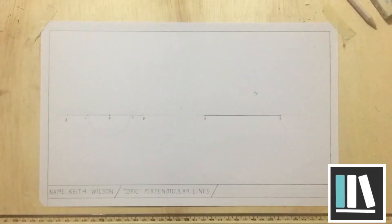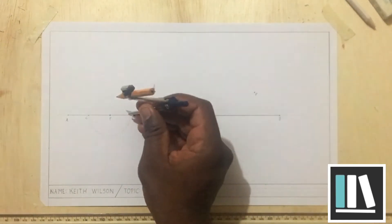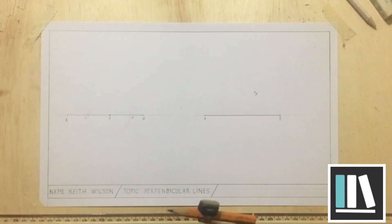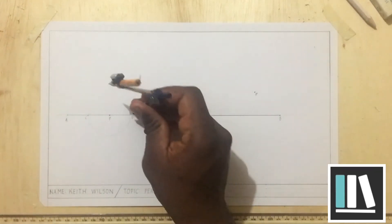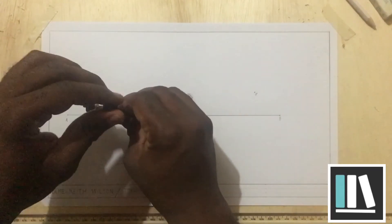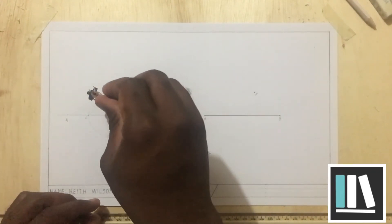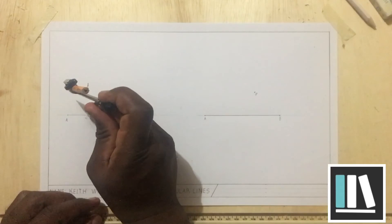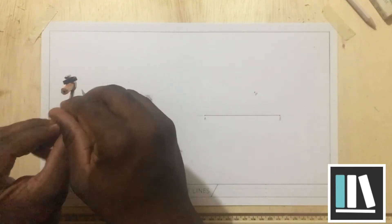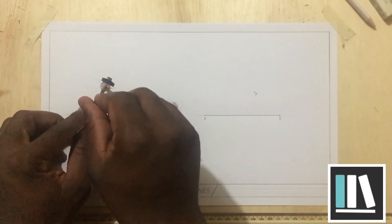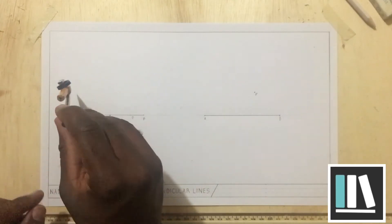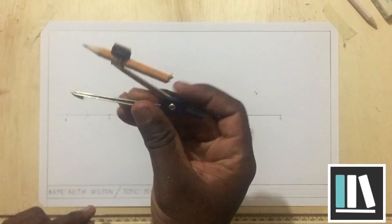Now, I am going to take the compass and open it a bit further to a convenient length. I am going to place the compass point at C and at D to swing two more arcs with the same setting.